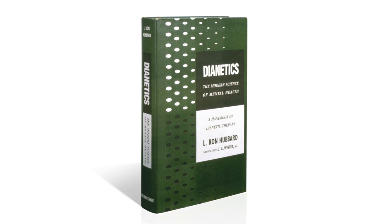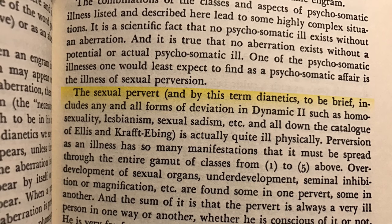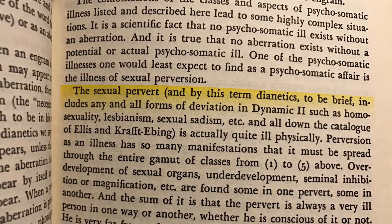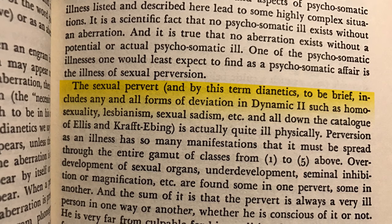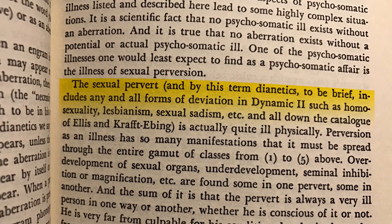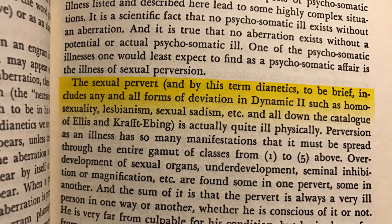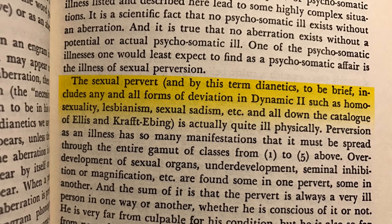So what exactly does L. Ron Hubbard mean by perversion? If we go to the very first book that started it all, Dianetics: The Modern Science of Mental Health, L. Ron Hubbard says: 'The sexual pervert — and by this term in Dianetics, to be brief — includes any and all forms of deviation, such as homosexuality, lesbianism, sexual sadism, etc.'